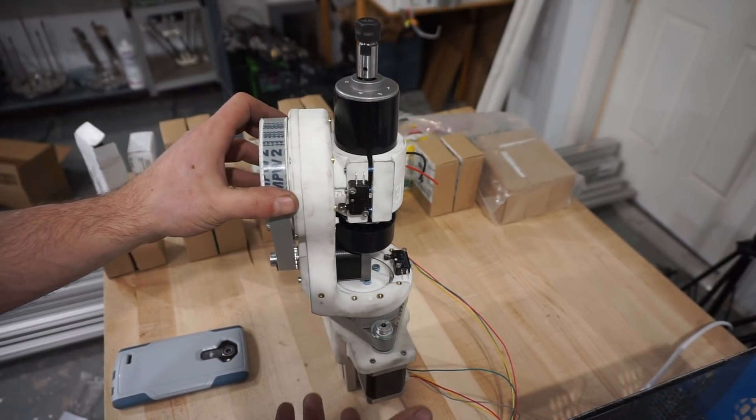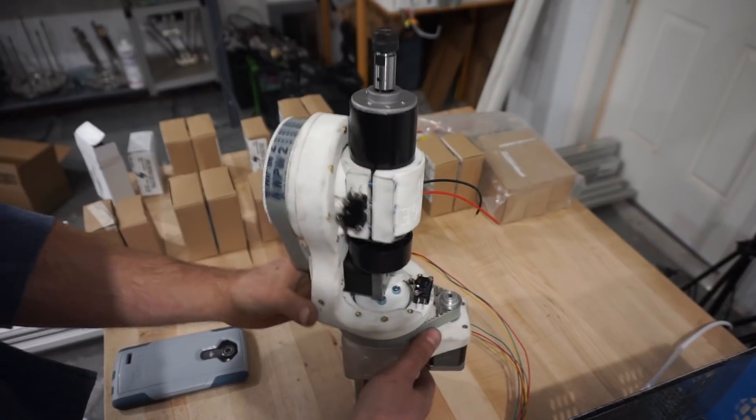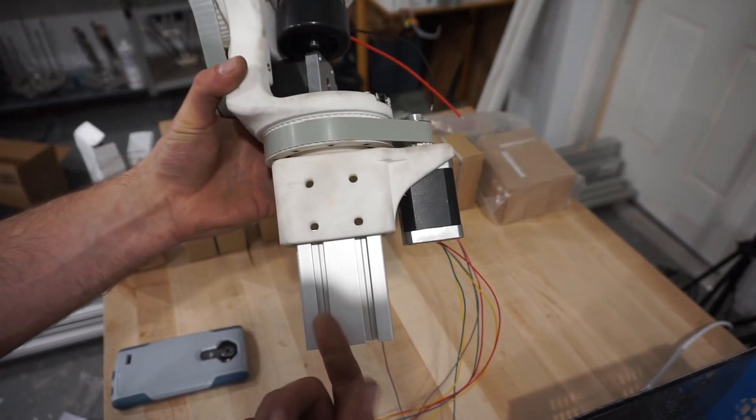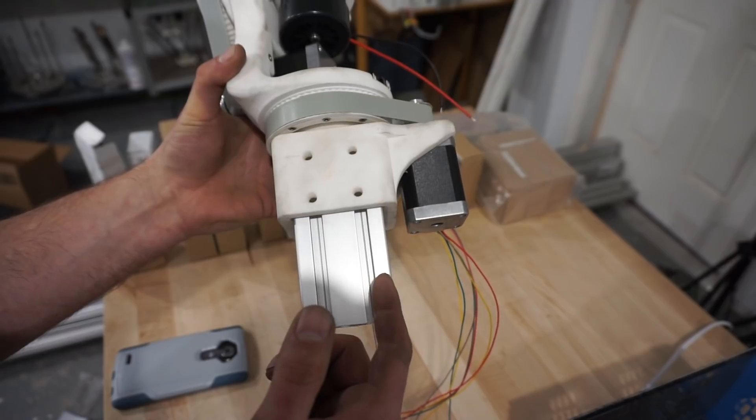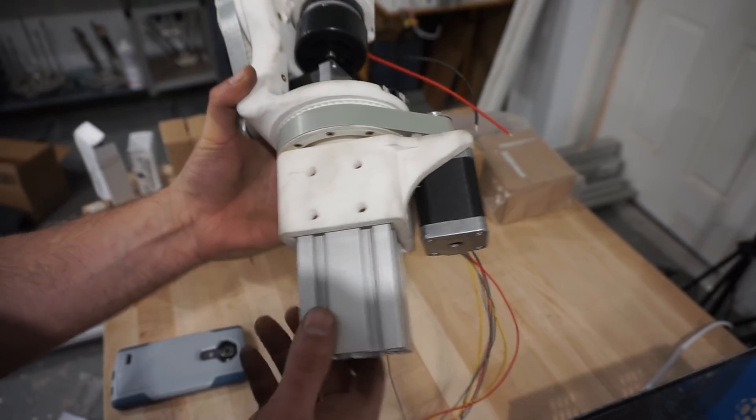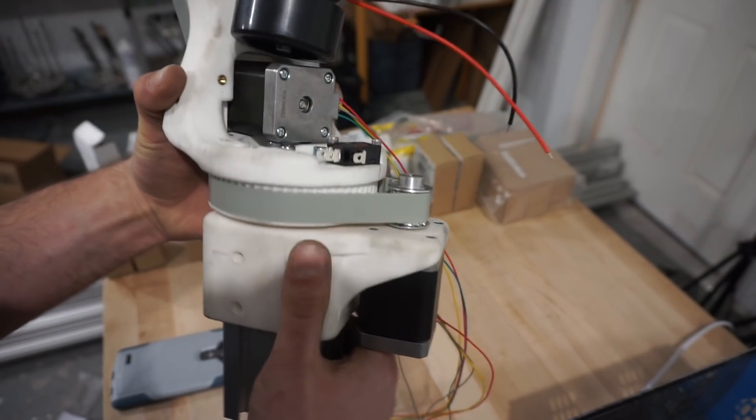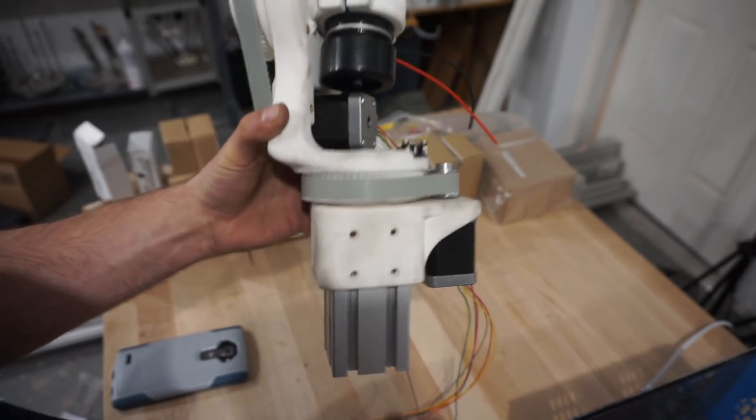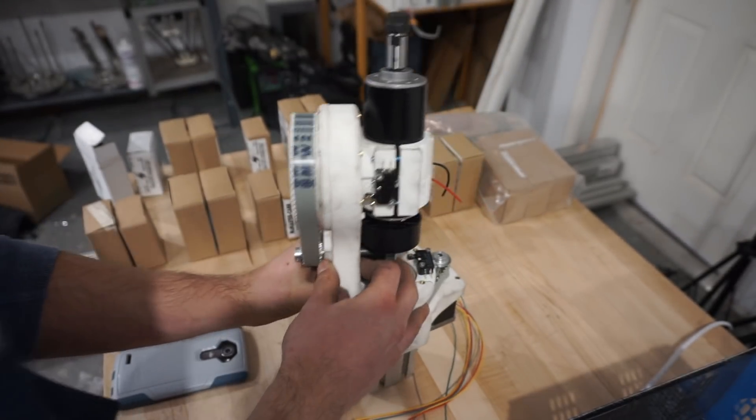And it goes on to the Z axis, which is going to be made out of 60 millimeter aluminum extrusion. Pretty standard. You can get this stuff on eBay or from all kinds of different suppliers. It's pretty easy to get ahold of.